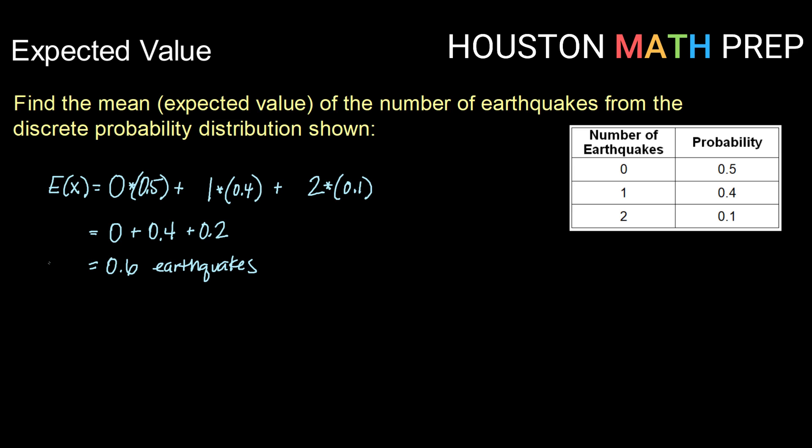It's important to note that the expected value doesn't actually have to be something that is possible. When we say we expect about 0.6 earthquakes, in a discrete probability distribution we know that's not possible — you either have zero earthquakes or you have one; you can't be somewhere in between. However, remember that expected value, or mean, is an average. So if we averaged out the number of earthquakes over a very long period of time, we would say there are about 0.6.